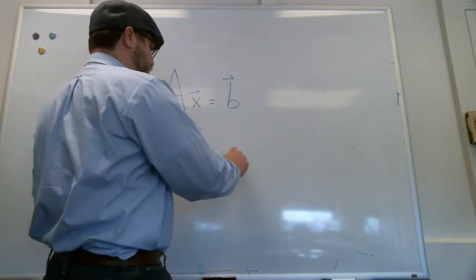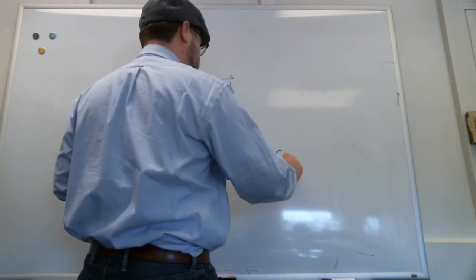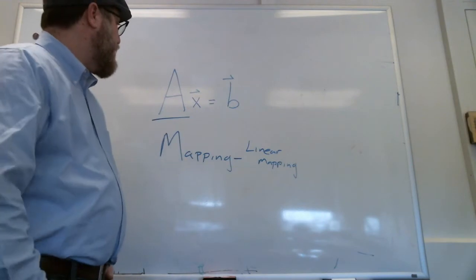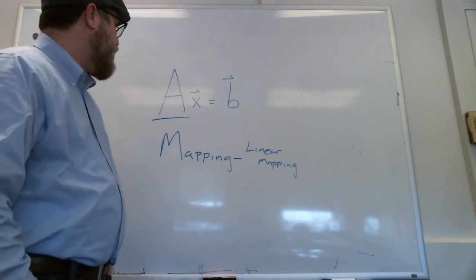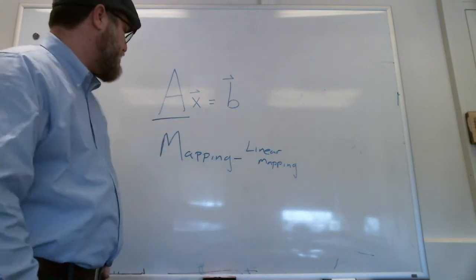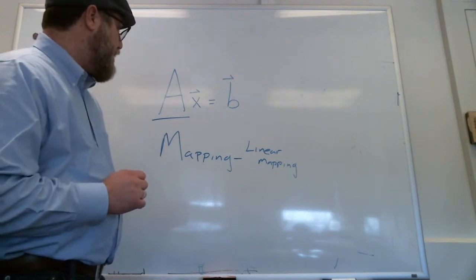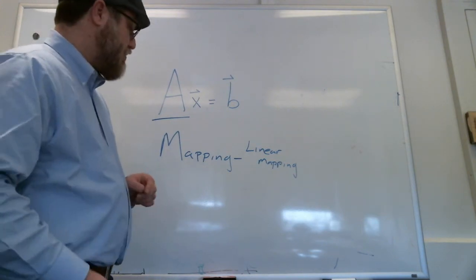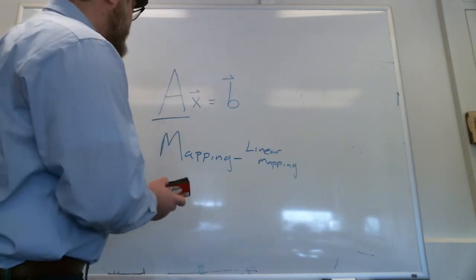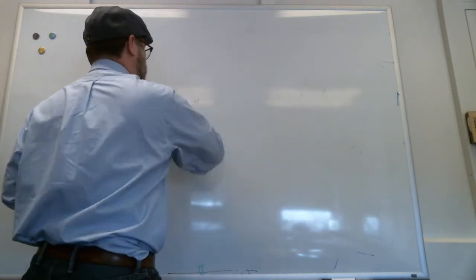And in particular, we're thinking of a linear mapping. In the case of this matrix product, we are mapping vector X onto vector B, and A is the matrix that describes that map. And so what can you do with a linear transform? There's a couple really important types of mappings that I want you to be familiar with.